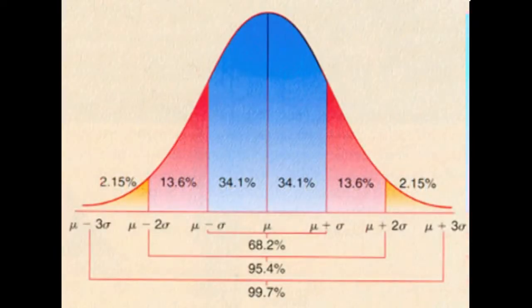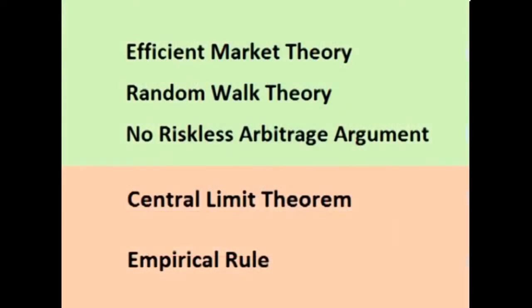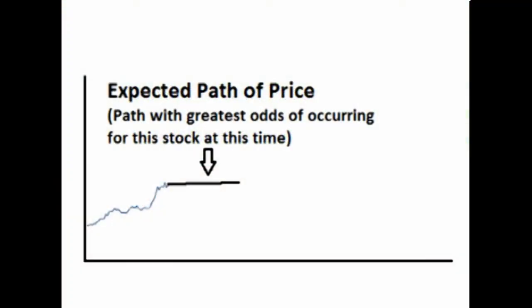Volatility is used to form a range around the expected path for price, to create a continuous range of probability for what the actual rate of change in price will be. By combining some basic assumptions about the markets with some basic laws and theories of statistics, we can develop an expected path for price — the path that has the greatest odds of occurring. Even though we know price probably will not follow that path exactly, it has a better chance of occurring than any other path, so we call it the expected path for price.